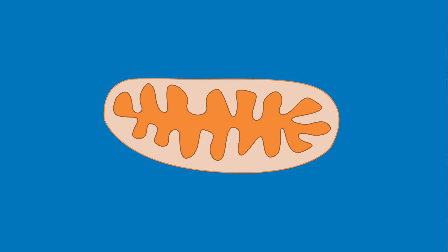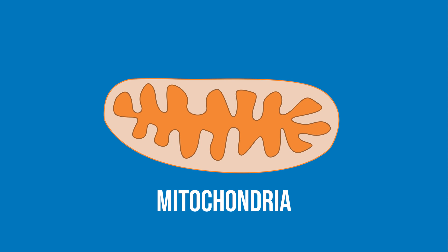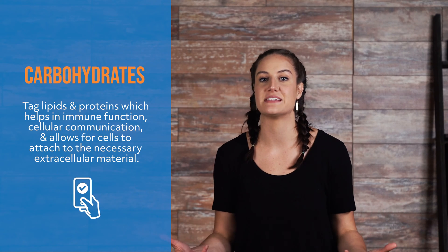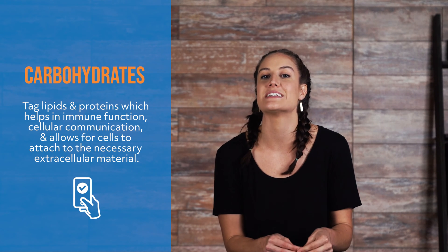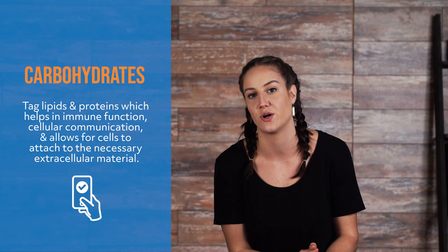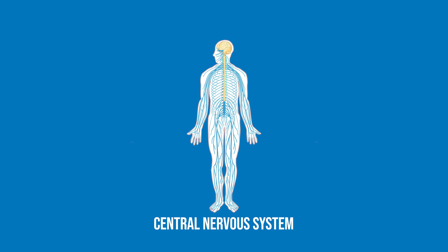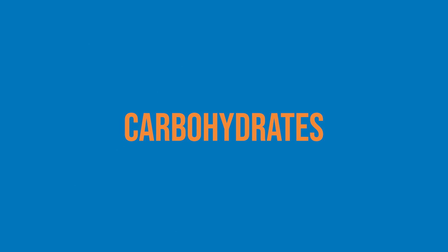Carbohydrates supply our bodies with readily usable cellular energy. Glucose, the simplest carbohydrate, enters into our cells' mitochondria, is converted into energy in the form of ATP, and is used for various cellular functions. Carbohydrates are also used to tag lipids and proteins, which helps in immune function, cellular communication, and allows cells to attach to necessary extracellular material. Our central nervous system and muscles need a lot of energy to function, and this energy comes from carbohydrates. Consumable carbohydrates can be found naturally occurring in fruits, vegetables, milk products, and grains.